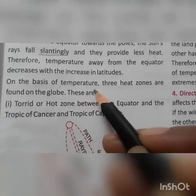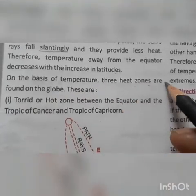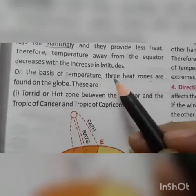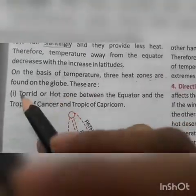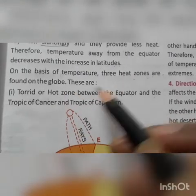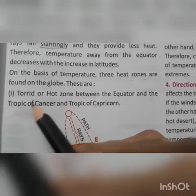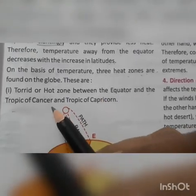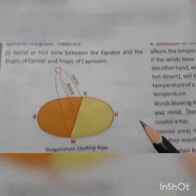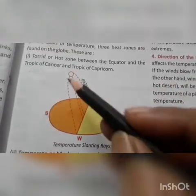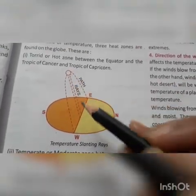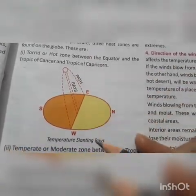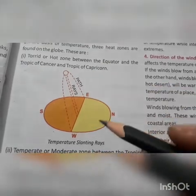On the basis of temperature, three heat zones are found on the globe. How many heat zones are there? There are three heat zones found on the globe. The first is the torrid or hot zone, between the equator and the Tropic of Cancer and Tropic of Capricorn. The rays there are slanting — they do not fall directly as they do on the equator.